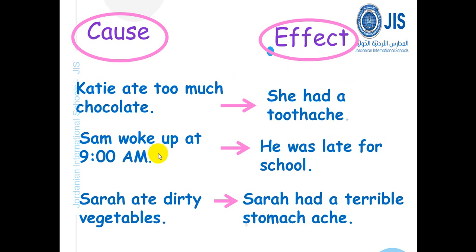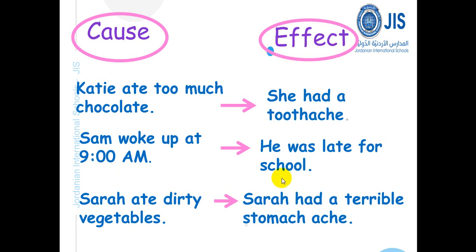Sam woke up at 9 a.m. — the cause, the reason, is that Sam woke up late at 9 a.m. So the effect, the result, is that he was late for school. The cause is that Sarah ate dirty vegetables, so what happened as an effect, as a result? Sarah had a terrible stomach ache.